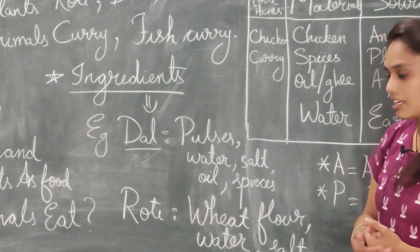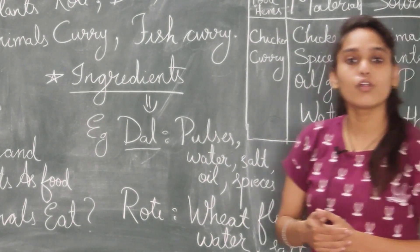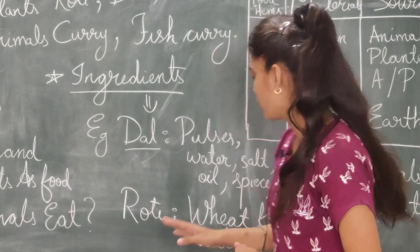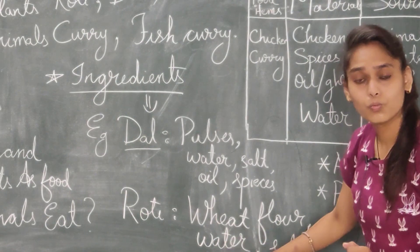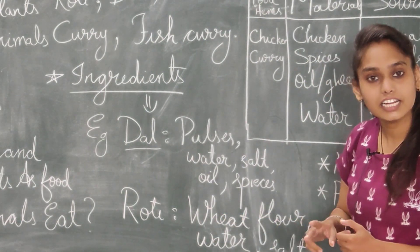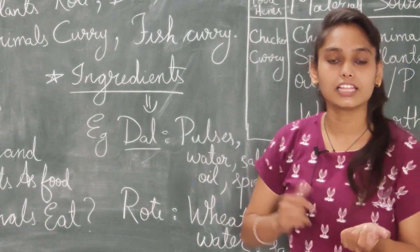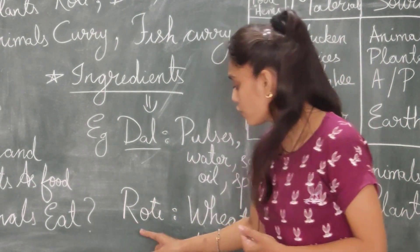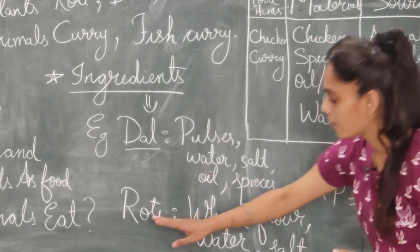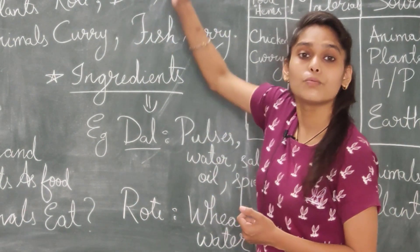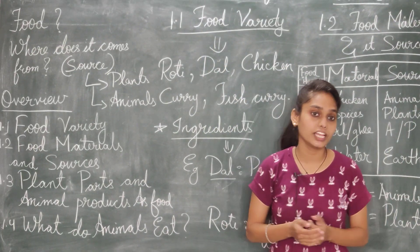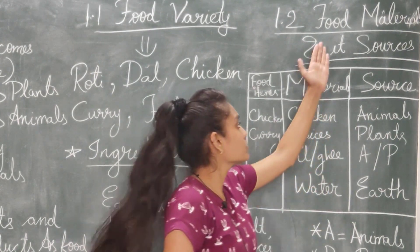दूसरा example है रोटी। रोटी किससे बनती है? Wheat flour — मतलब आटा — water और salt। इन तीनों चीज़ों से आटे को गूंथते हैं, फिर heat पे पकाते हैं तो हमें रोटी मिलती है। तो ये सब हमारे ingredients हो गए और रोटी हो गई food का variety। इस तरह हमने 1.1 complete किया।